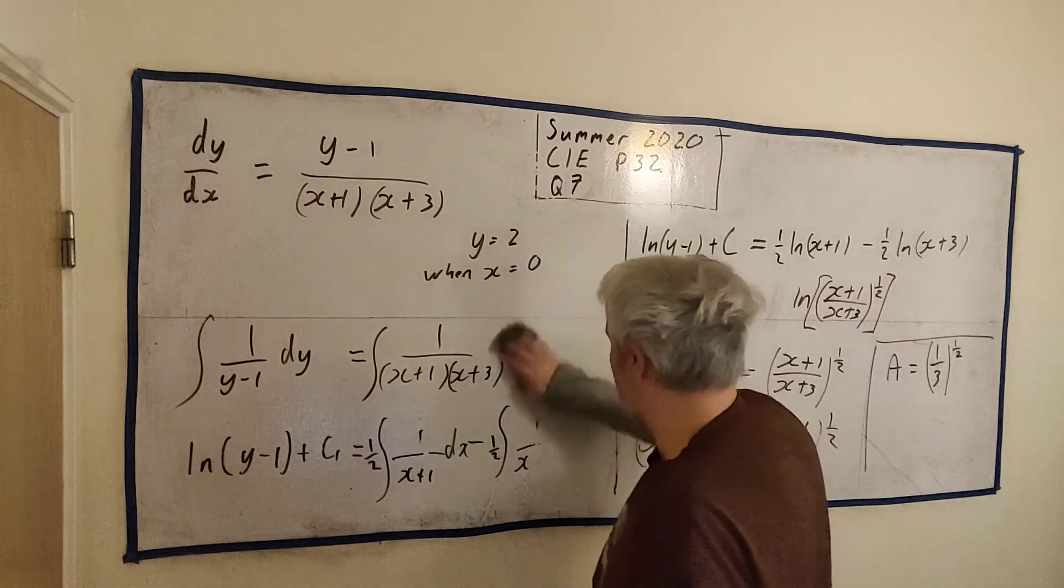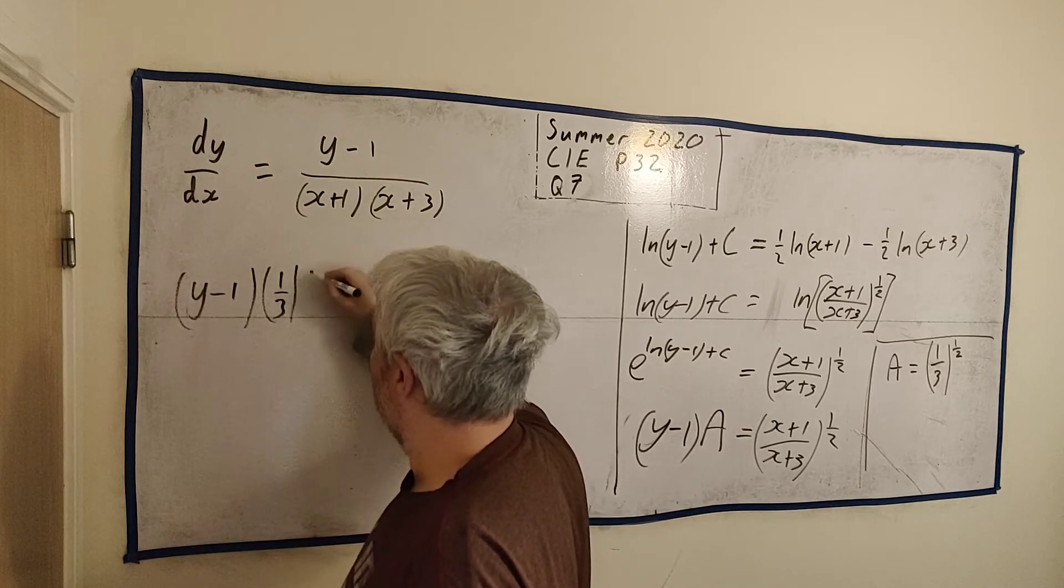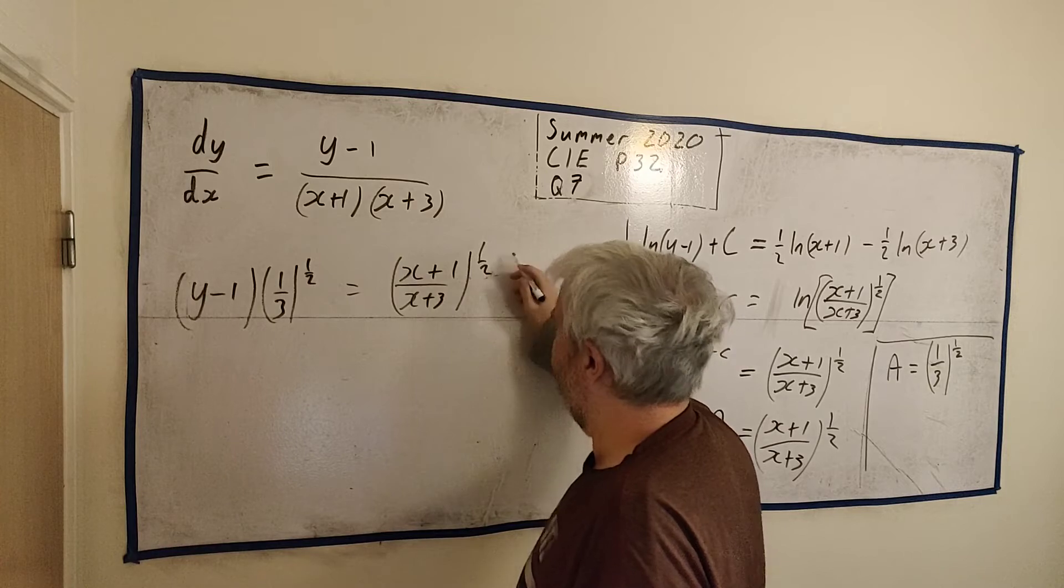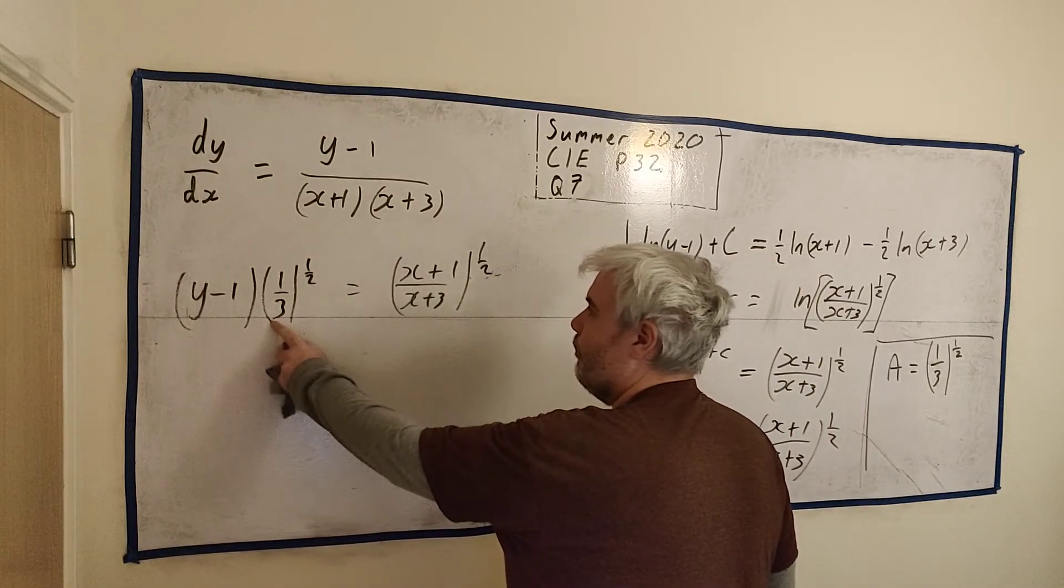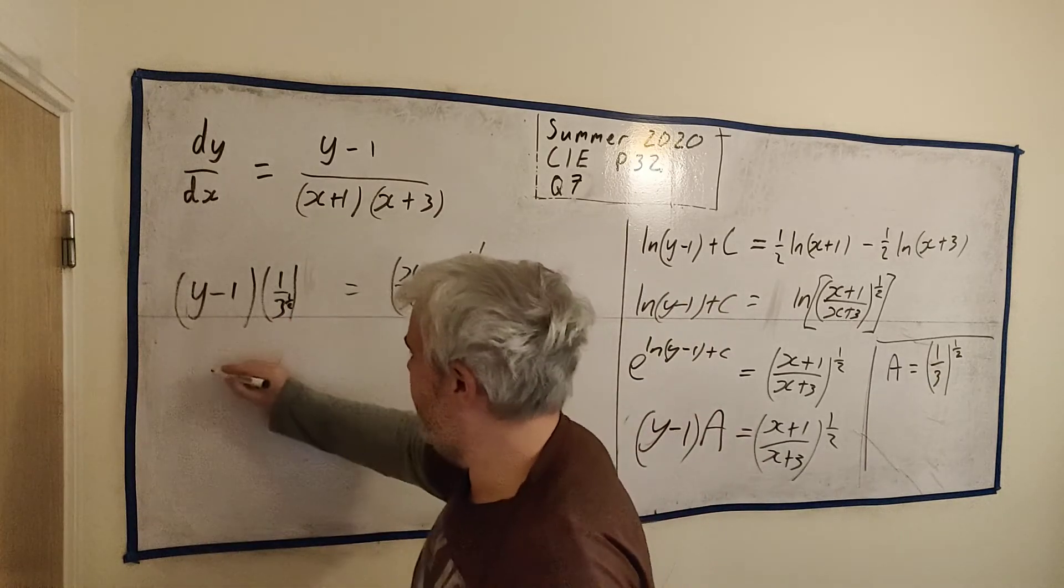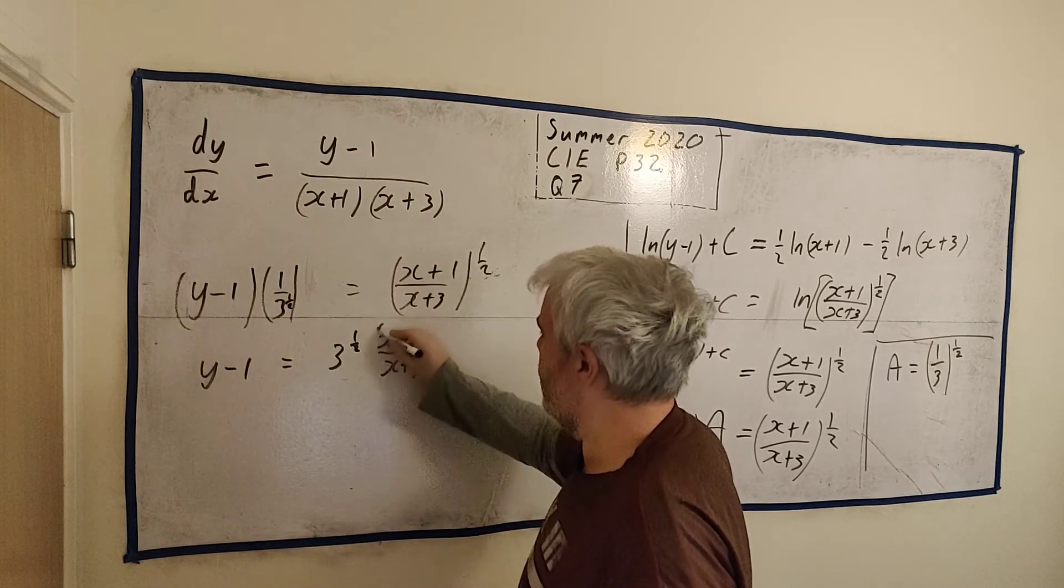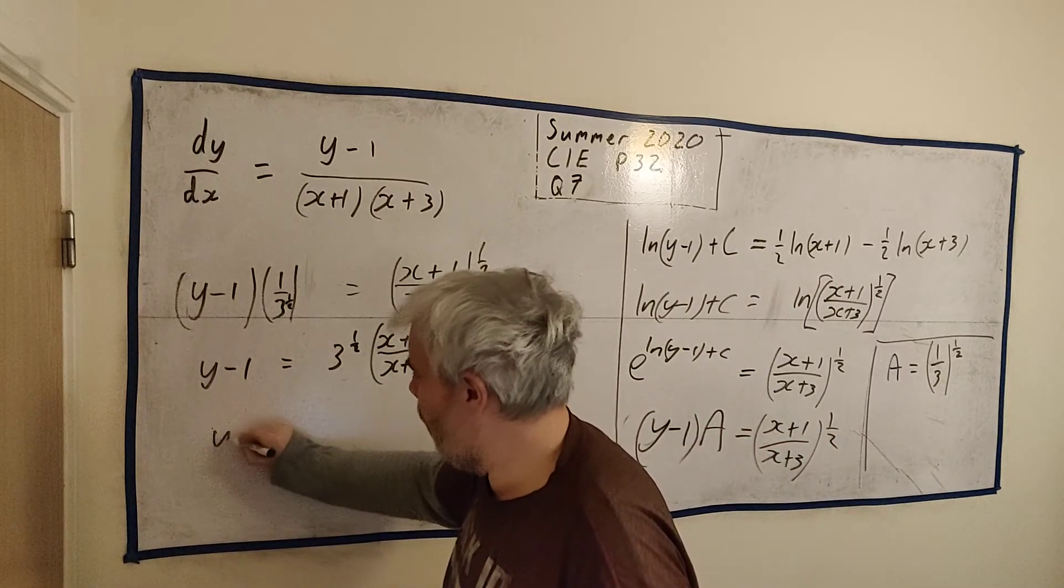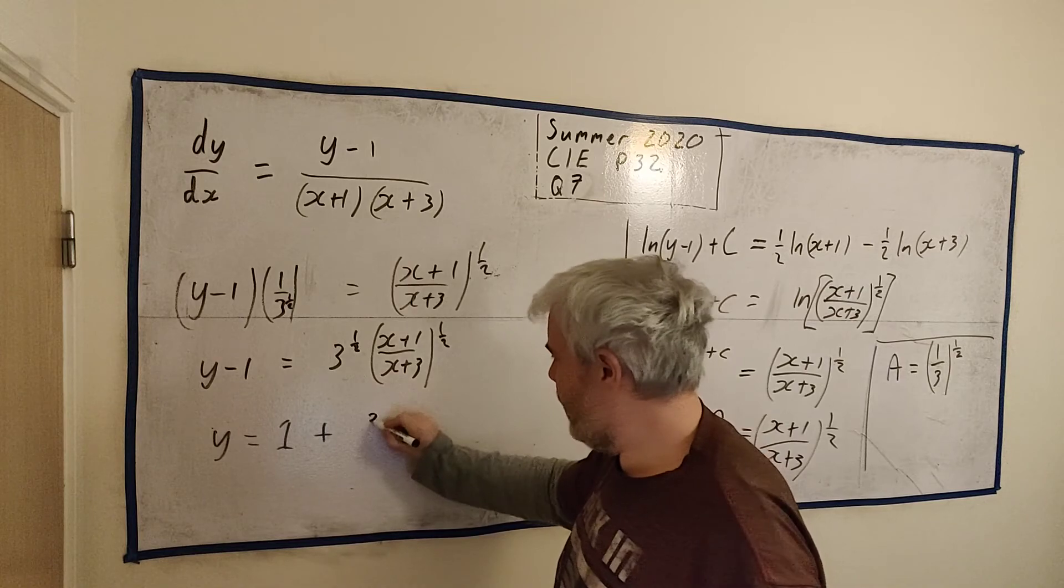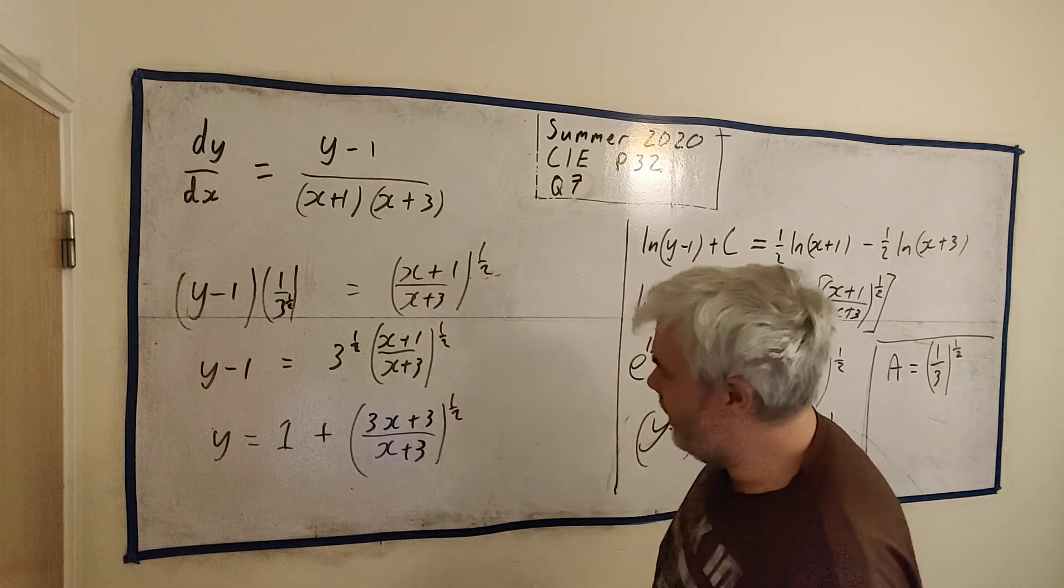Let's put that in. I need to rub out here. I need to continue this on over here. So remember, we found out a is equal to that. So y minus 1 multiplied by 1 over 3 to the power of a half is equal to x plus 1 over x plus 3 to the power of a half. So let's put the half in over 1 over 3 to make this clearer. Let's multiply both sides by 3 to the power of a half. We get y minus 1 is equal to 3 to the power of a half times x plus 1 over x plus 3. That's also the power of a half. We can put these together then if we want. And that means y is equal to 1 plus, we can leave it like this or I could multiply 3 into here. So we get 3x plus 3 over x plus 3 all to the power of a half. And that's our final answer.